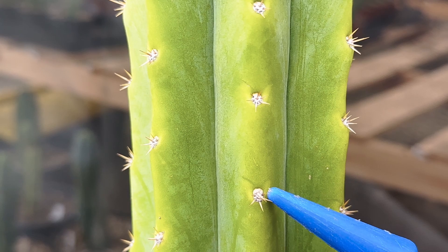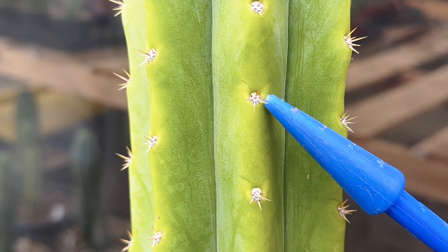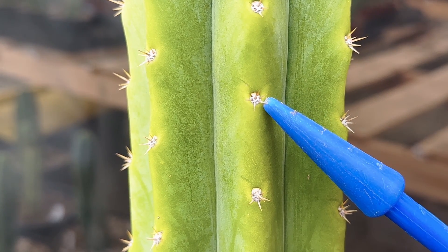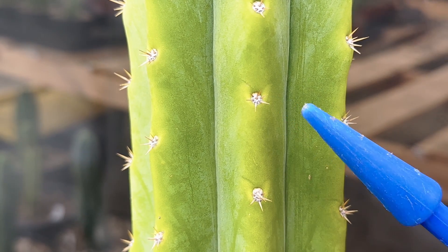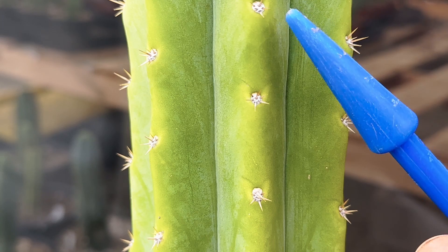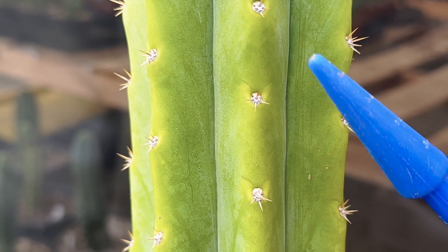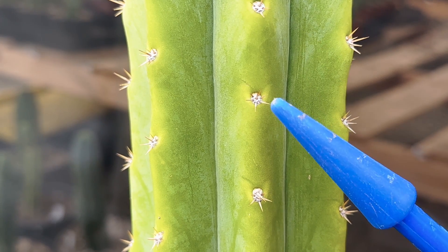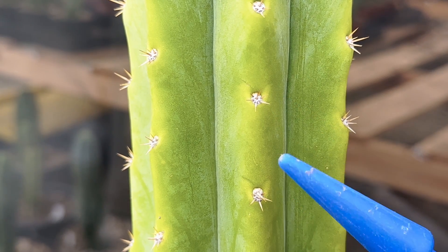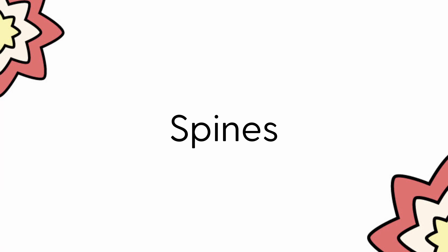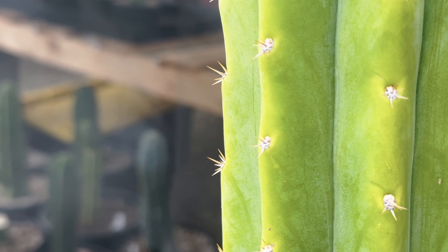The areoles are circular patches that are the origin of spines, flowers, and new growth, nestled along the ribs of the stem. They are the fingerprint of the cactus's identity.